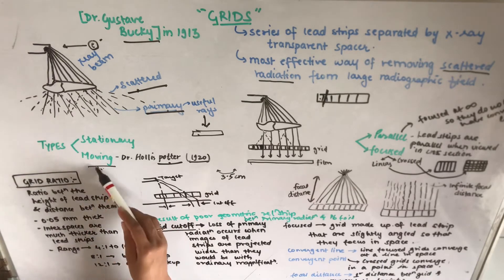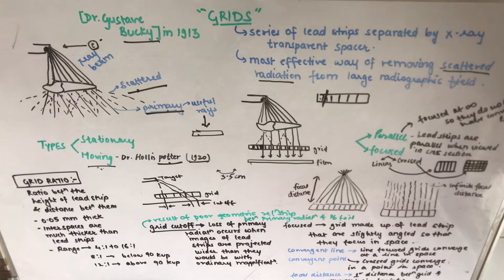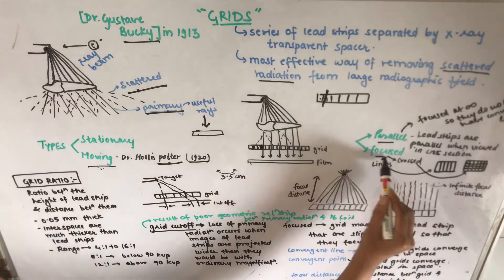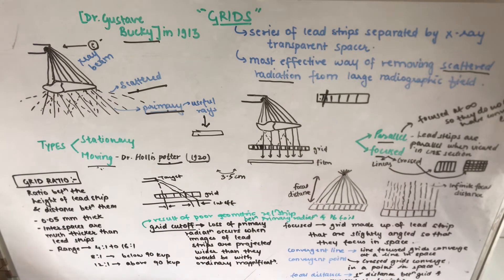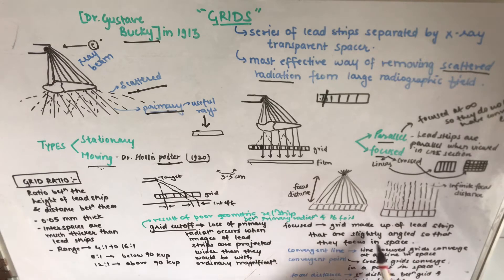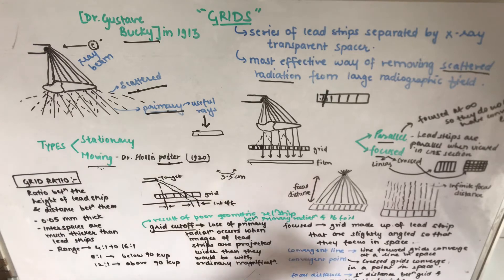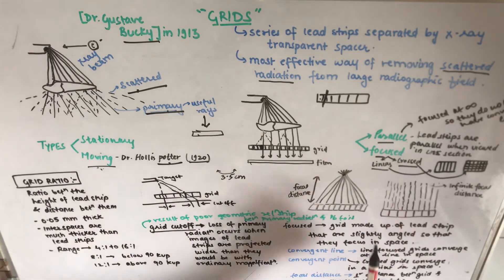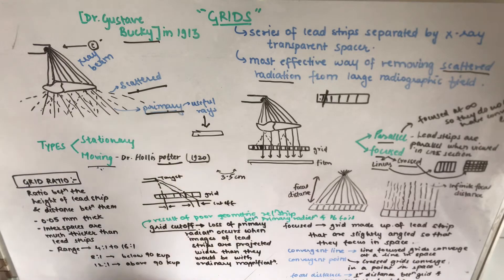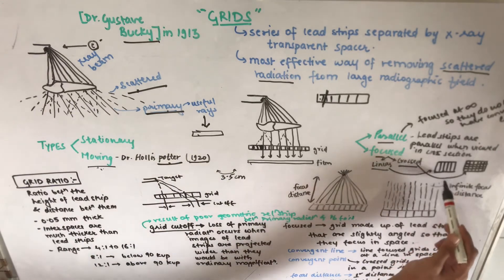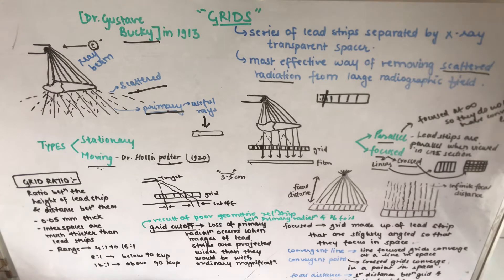There are also parallel and focused types of grids. Focused grids are made up of lead strips that are slightly angled so that they converge in space. Within focused grids, there is the linear type, in which the lead strips are parallel to each other along the longitudinal axis. This allows the x-ray tube to be angled along the length of the grid without loss of primary radiation due to grid cutoff.